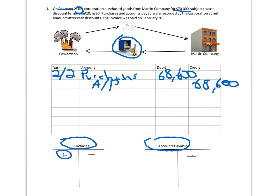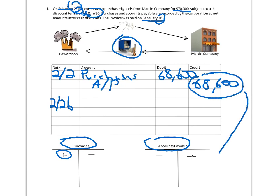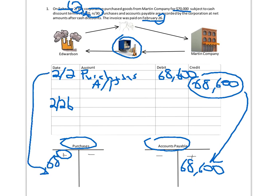Next we journalize the actual payment on February 26th. Notice the 26th is 24 days after the initial purchase, which is outside the discount period, so the net 30 terms apply. We post the accounts payable: any liability goes up on the credit side, so $68,600 gets posted there, and purchases comes in at $68,600.